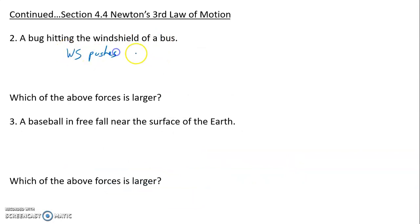A bug hitting the windshield of a bus. Windshield pushes on the bug to the right. Doesn't matter. We can pick this however we want, and then we just switch this. The bug pushes on the windshield. Which direction? Whatever way we picked before, we just do the opposite. So when a bug splatters on your windshield, the windshield pushes on the bug, but the bug pushes back on the windshield just as hard. These are equal.